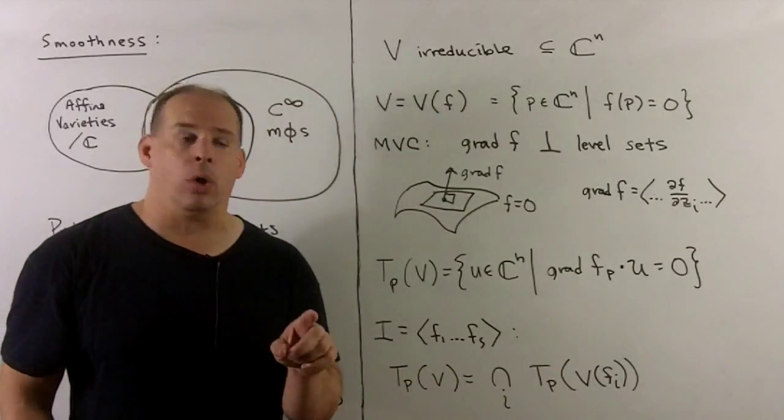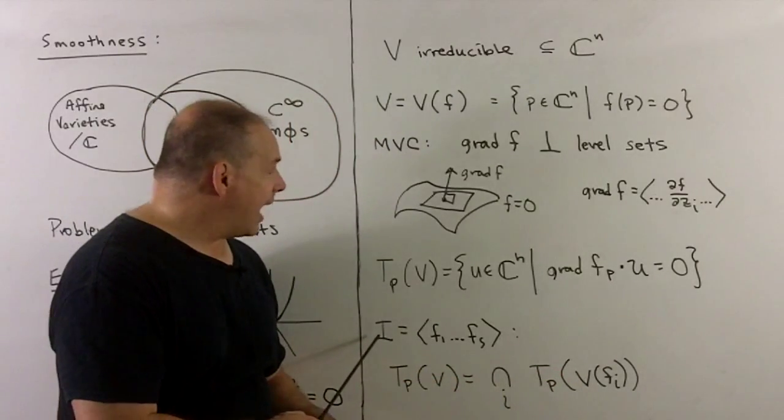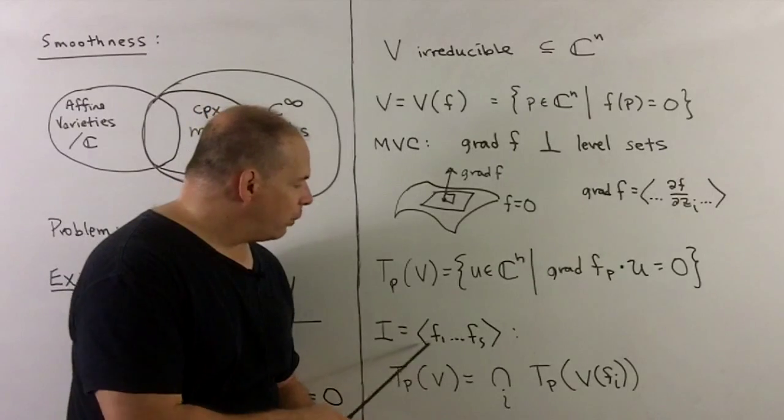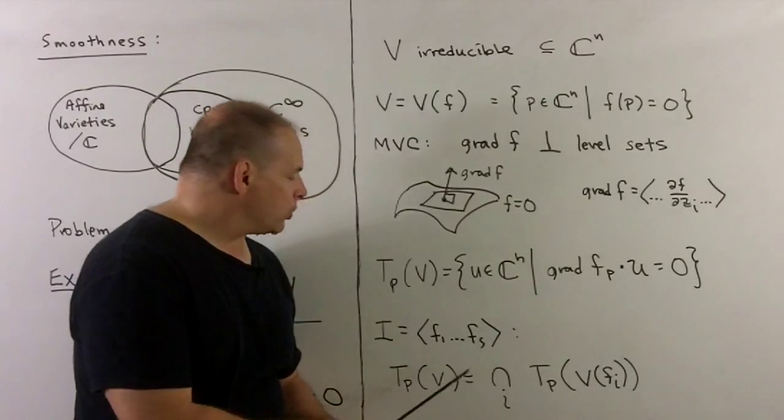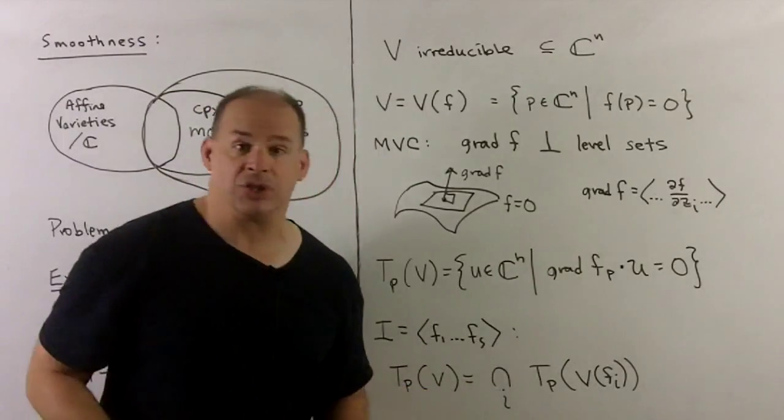If I have many polynomials, so we have our variety defined by F₁ through Fs where they vanish, we're just going to take the intersection of the tangent spaces.